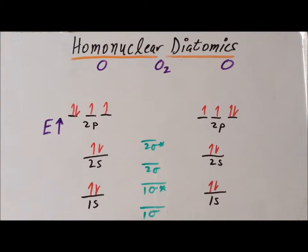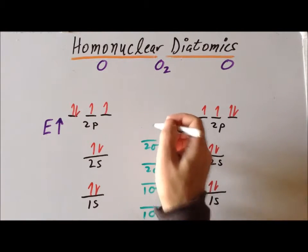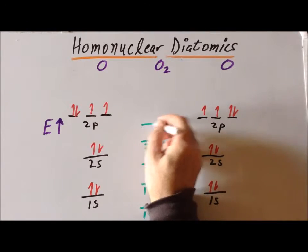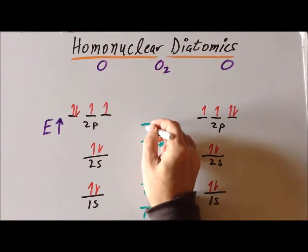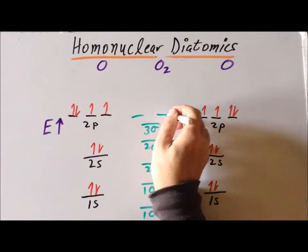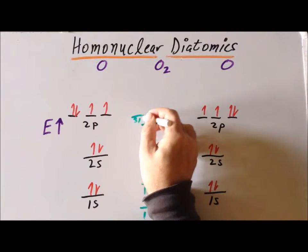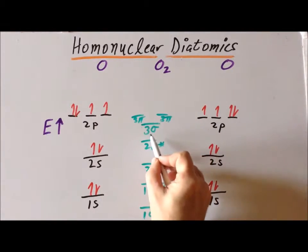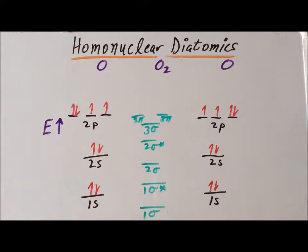Now, once we get to the overlap of the 2p orbitals, we notice something quite different from the earlier members of the second row of the periodic table. The lowest energy combination for the overlap of the 2p orbitals is now going to be a sigma orbital, followed by the 2 pi orbitals. So, effectively, it looks as if the sigma and pi combinations for the overlap of the 2p's have switched.